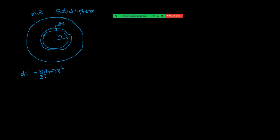Now focus on what dm is. Since it is a solid sphere, we have to consider mass per unit volume, that is M upon (4/3)πR³. Now the volume of this thin shell is 4πr²·dr, giving us the mass of that hollow sphere.